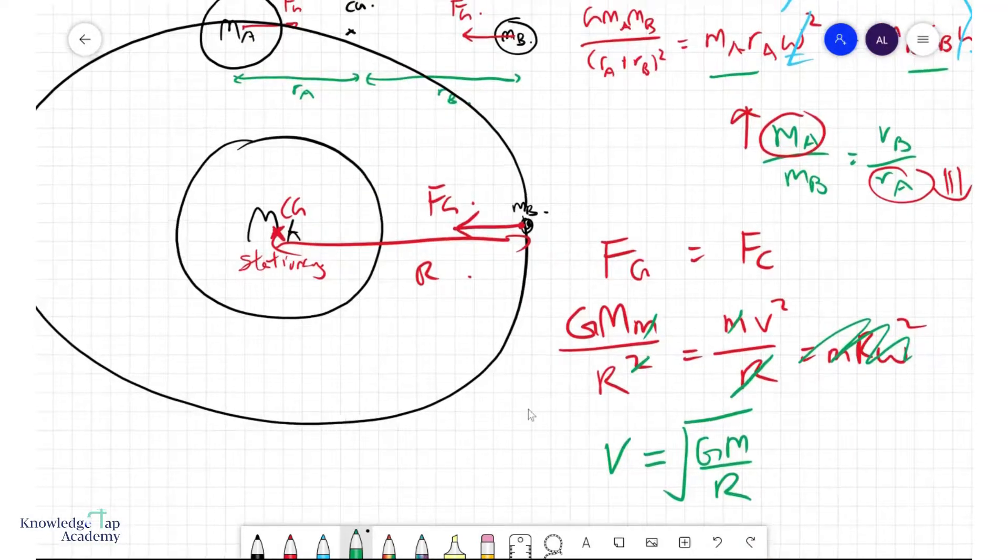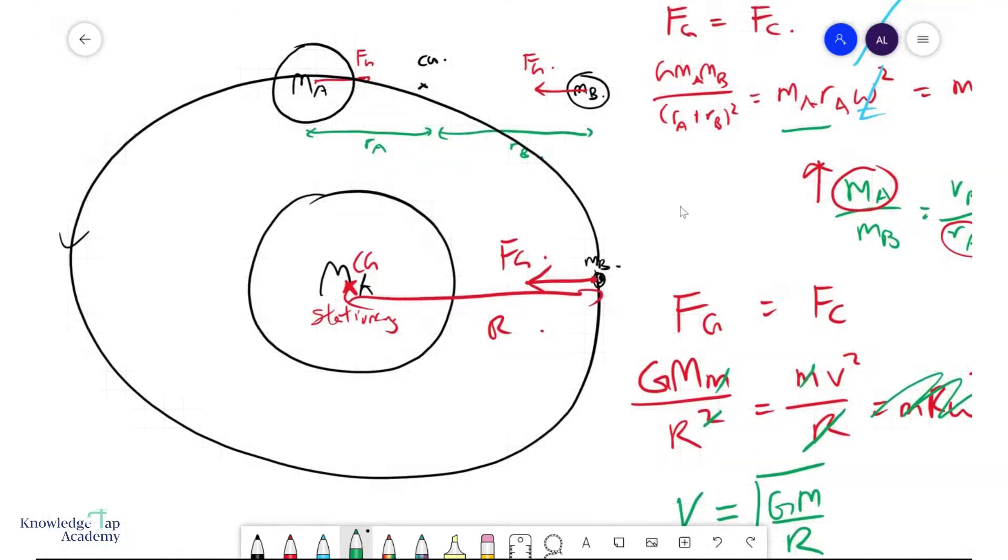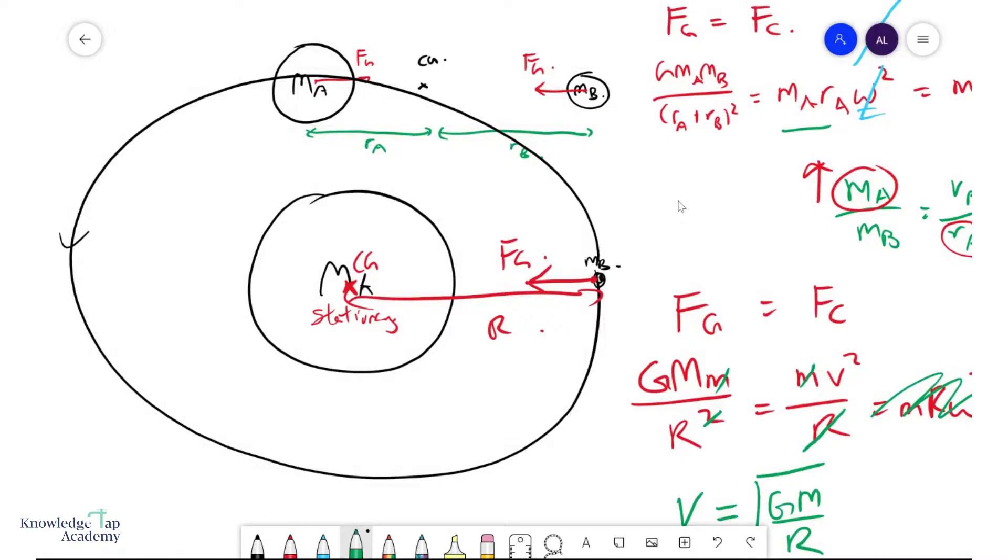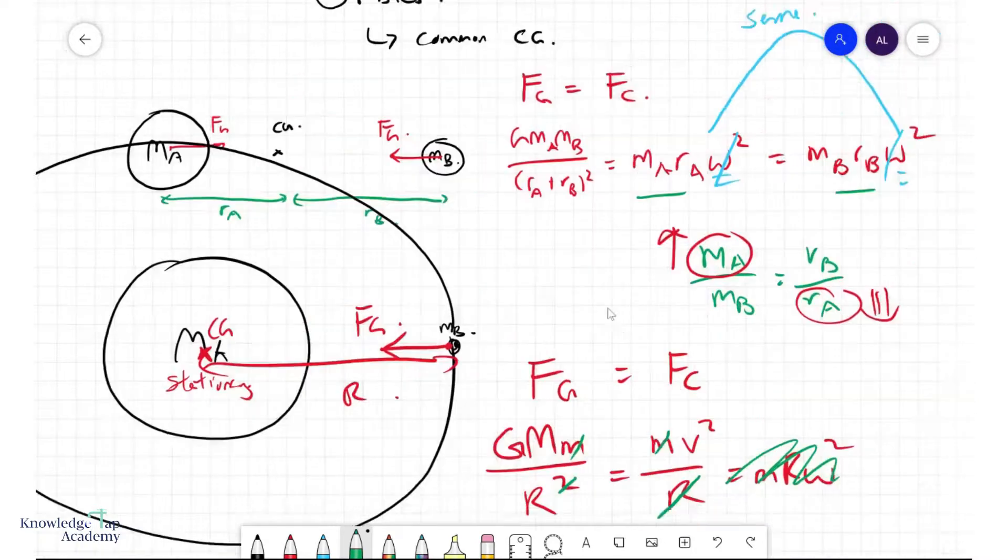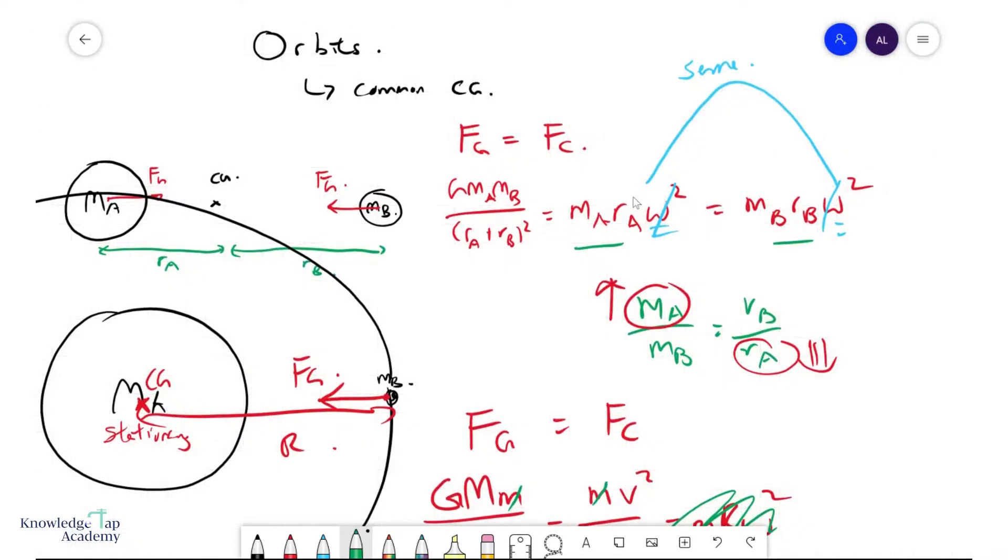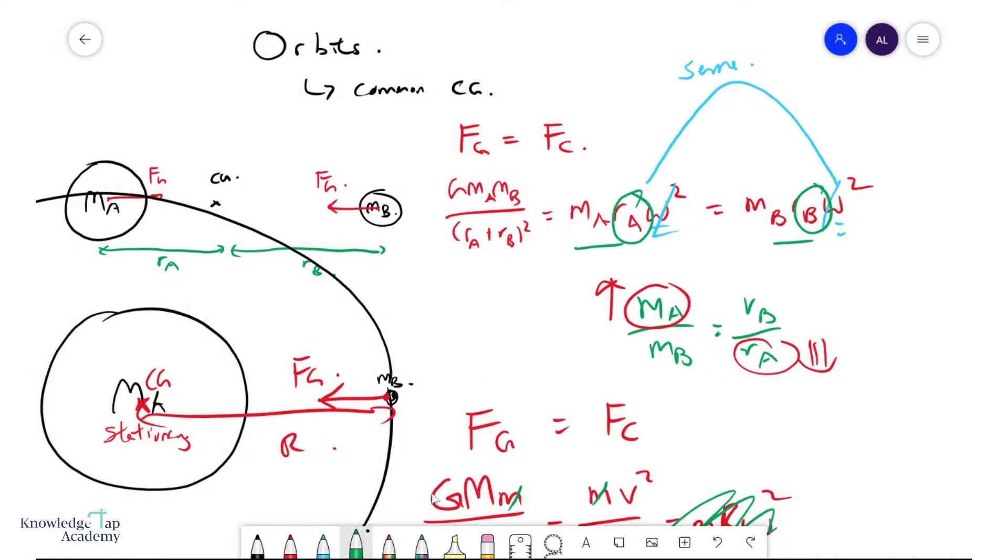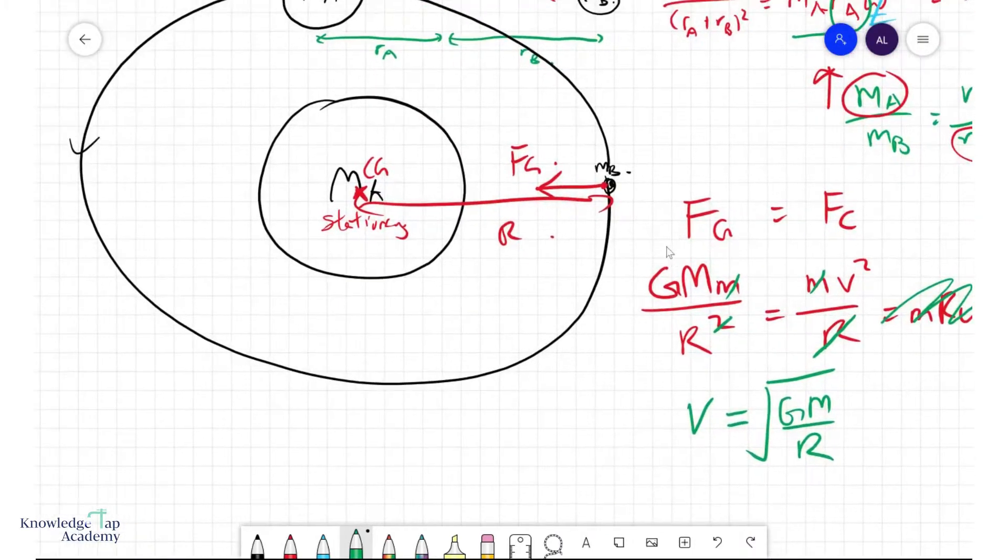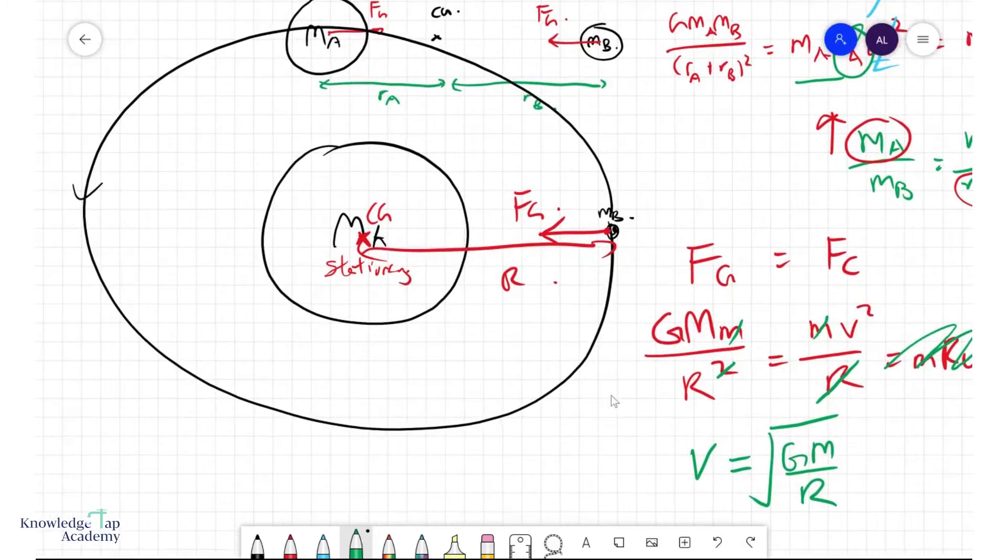And so, this is the difference between a binary model, where both the masses are significant, in which case, the r's are unique, but when one mass is much larger than the other, everything is simplified because there is only one orbital radius involved, and so this is how we model orbits.